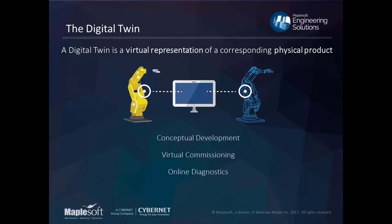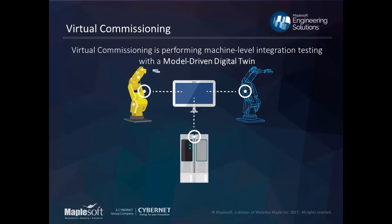It works well with virtual commissioning, and even after the fact you can have these models running online after production to help with diagnostics and operations. Overall, we hope they will bring you smarter designs. In a nutshell, virtual commissioning is when you take these virtual models, connect them to your virtual PLC, and do all the testing of your PLC and control logic with the virtual system before you ever hook it up to a physical prototype or download the PLC code to a physical PLC.